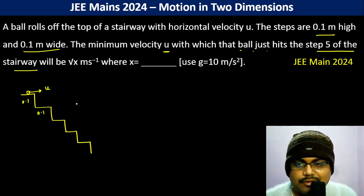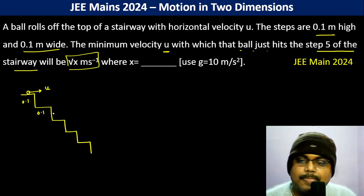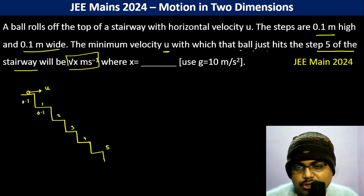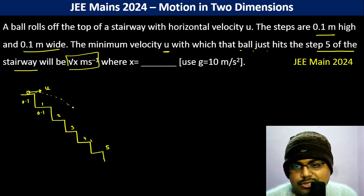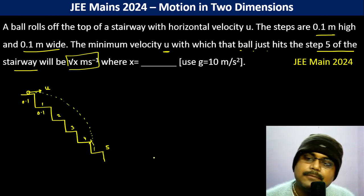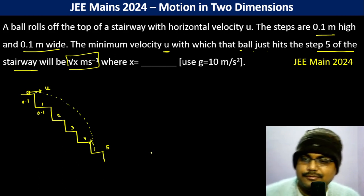It's one, two, three, four, and this is five, the fifth step. So it has to cross here, it has to travel such that it crosses here.